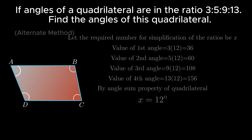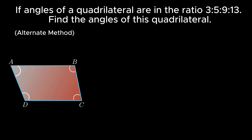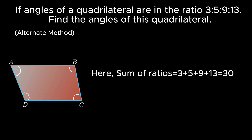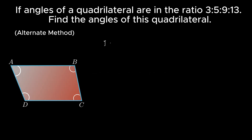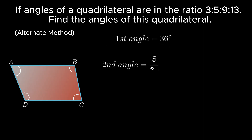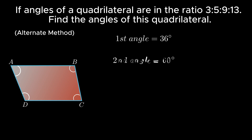There is an alternate way to solve the same problem. Under this method, the ratio of the individual angle is divided by the sum of the ratios and multiplied by 360 degrees. Therefore, the value of the first angle becomes 3/30 × 360° = 36 degrees, and the value of the second angle is 5/30 × 360° = 60 degrees.